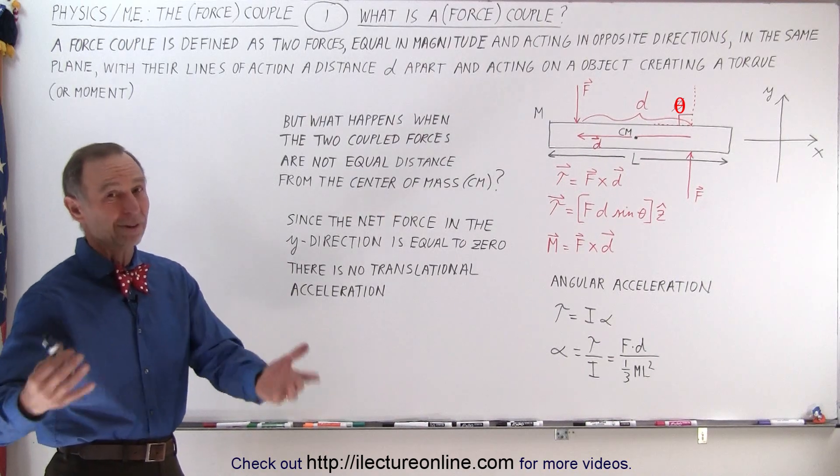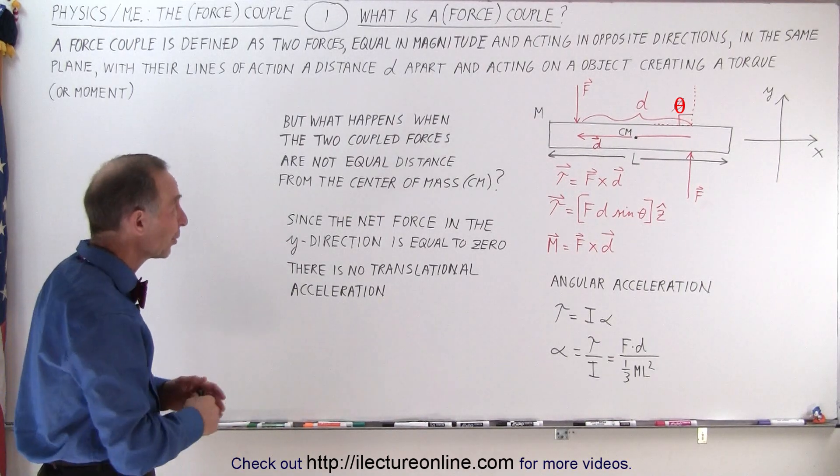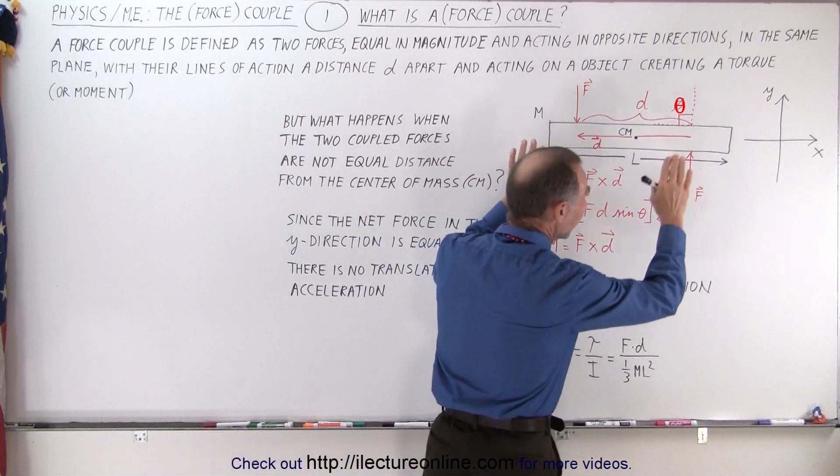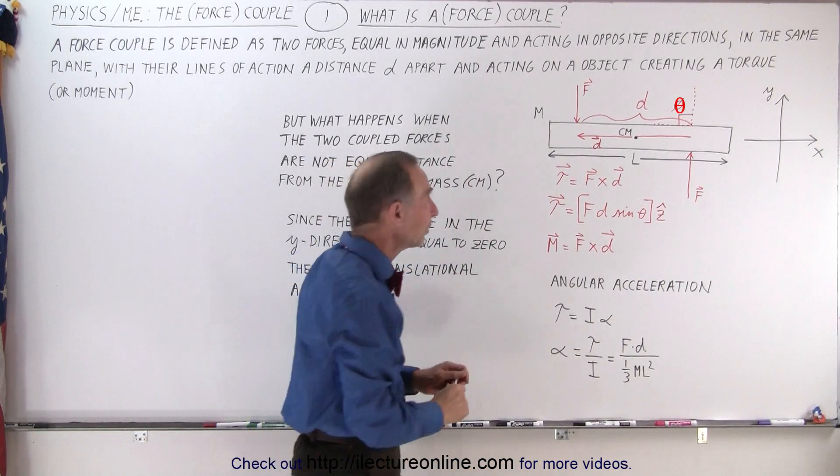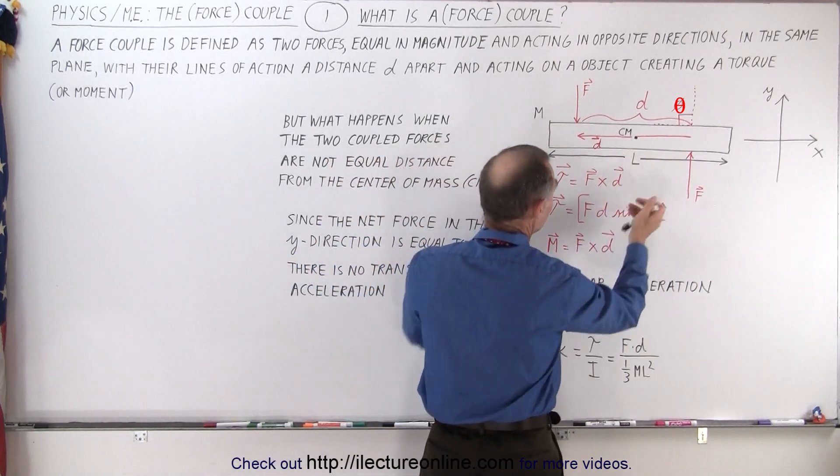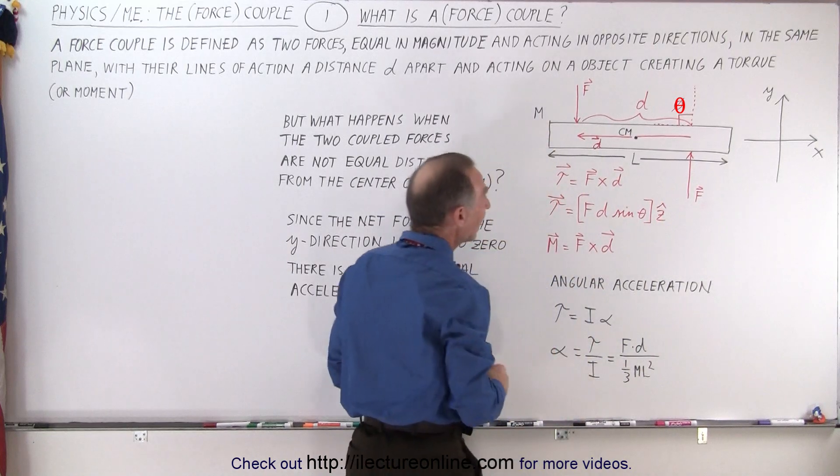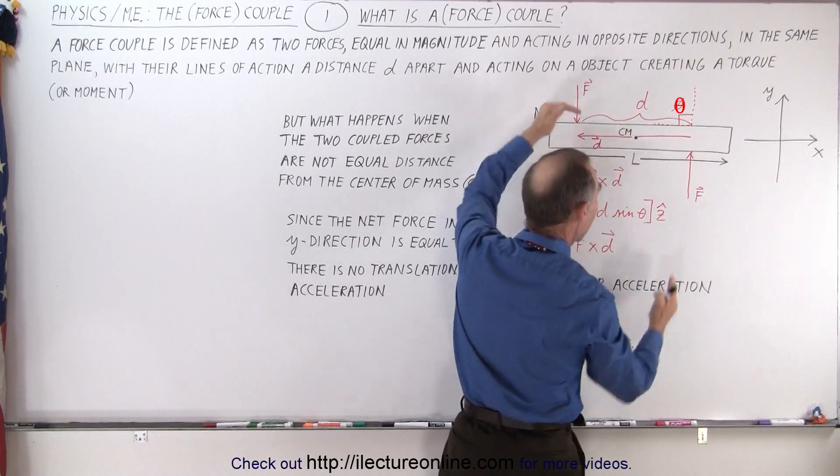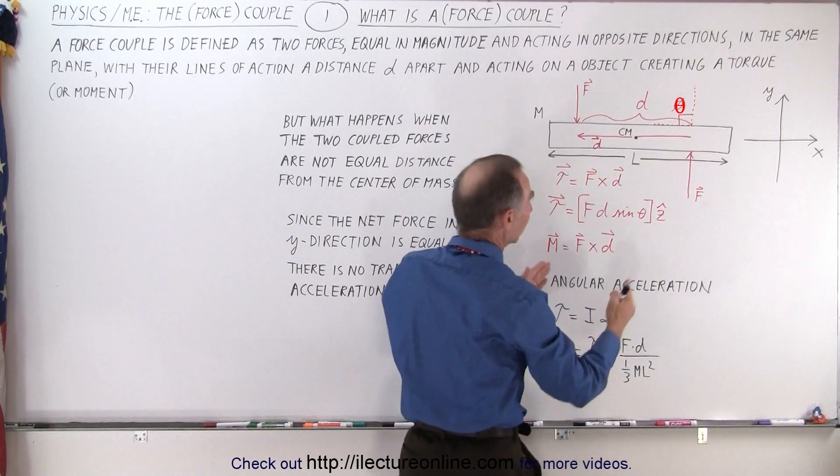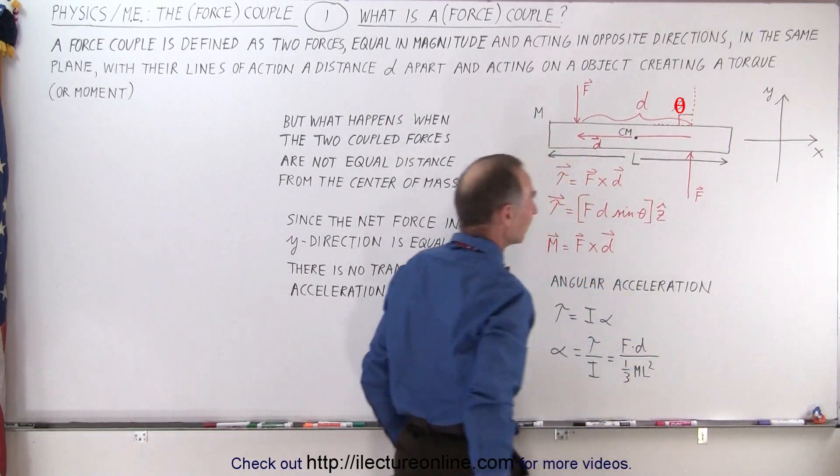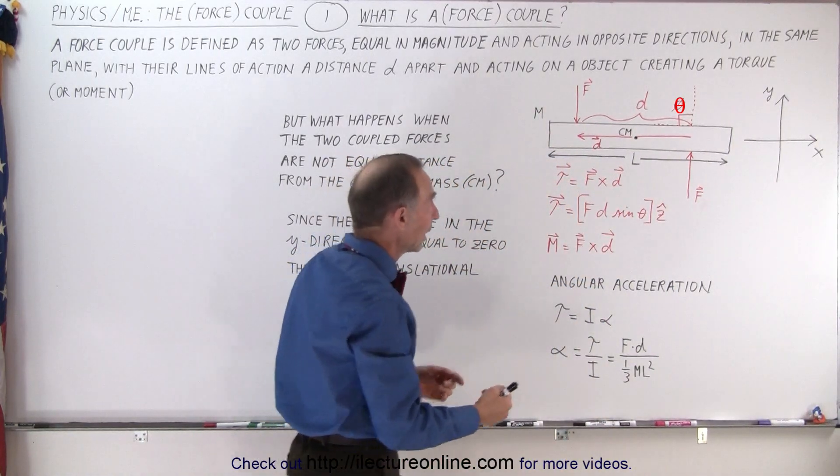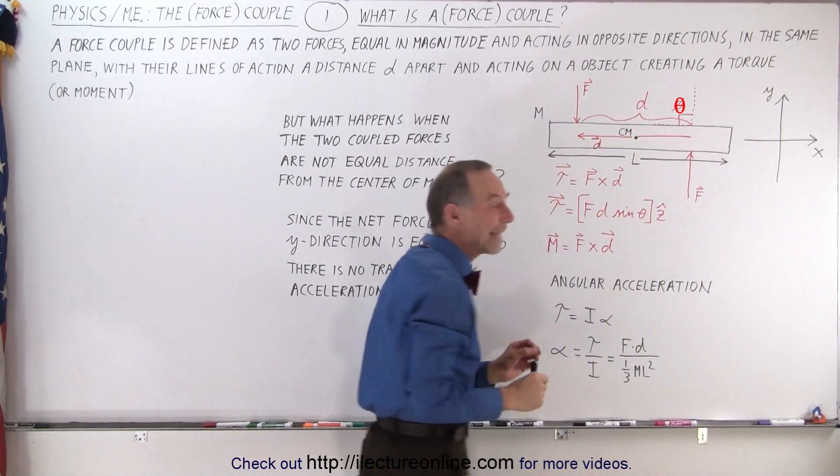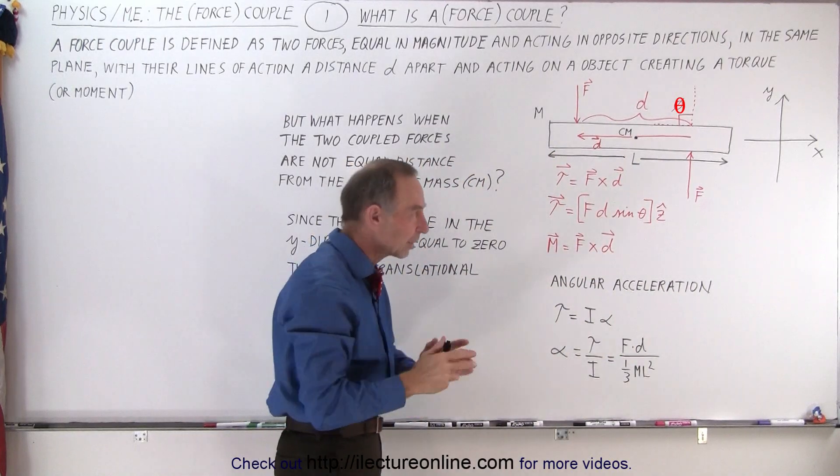So here we have a picture of it. Let's say we have a bar sitting on a table with no friction whatsoever. The center mass is right in the middle. The length of the bar is L, the mass is M. And now we apply two forces in opposite directions, same magnitude, in the same plane, acting on the same object, a distance d apart, or their lines of action the distance d apart.